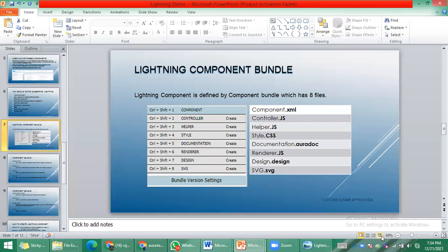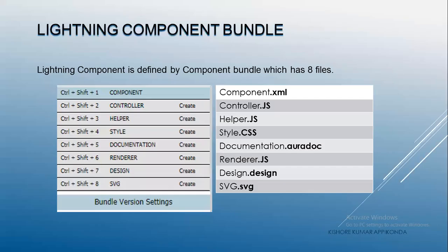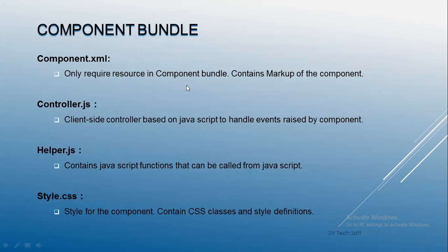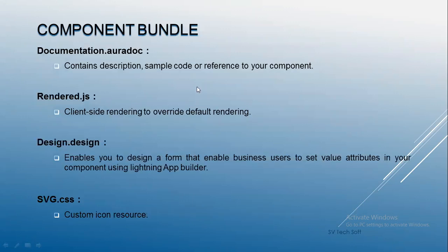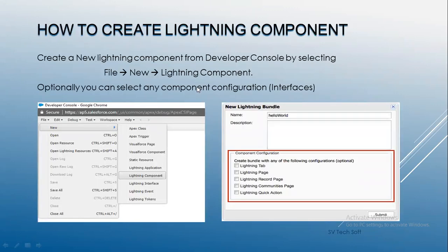Whenever you create any Lightning component, each component has eight different bundles. We call this the component bundle. Whenever you create any particular Lightning component, you will get eight different bundles: Component, Controller, Helper, Style, Document, Renderer, Design, and SVG. We will go through each one in detail.